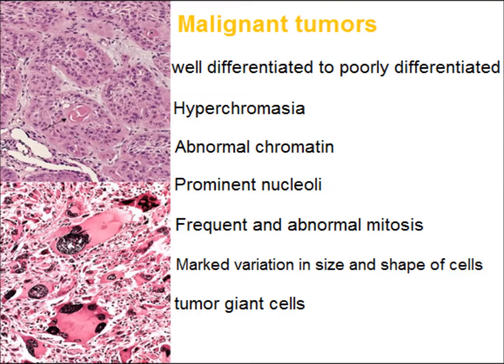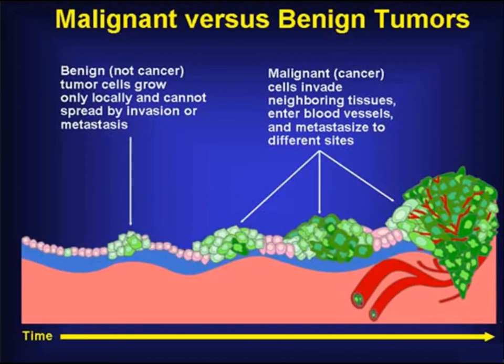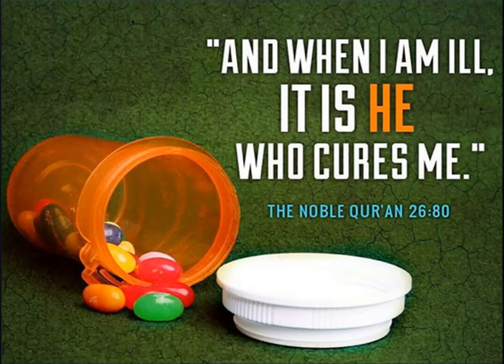Sarcomas usually prefer a vascular route for distant metastasis. Metastasis is the development of secondary implants discontinuous with the primary tumor in remote tissue. Malignant tumors invade neighboring tissue, enter blood vessels, and metastasize to different sites, usually to the bone and lungs.